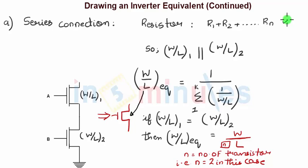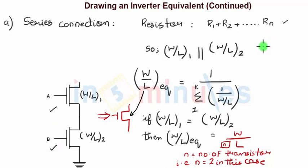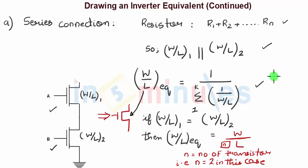When two transistors are connected in series, the W/L will be in parallel — W/L of 1 in parallel with W/L of 2. As we saw in the previous clip, this gives us a W/L equivalent, and the expression for that is written in equation number 1.